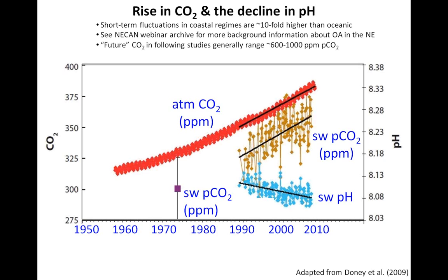I first want to remind everyone of what we've seen in previous talks: in coastal regions, especially in the northeast where there are estuaries, a shallow shelf, and freshwater input, the variability in CO2 in surface waters is much larger than the roughly 50 ppm stability seen in surface oceans. In the coastal oceans, from what we understand now, there's probably about two to four-fold higher variability in CO2 concentrations on timescales as short as days and as long as weeks or seasons.